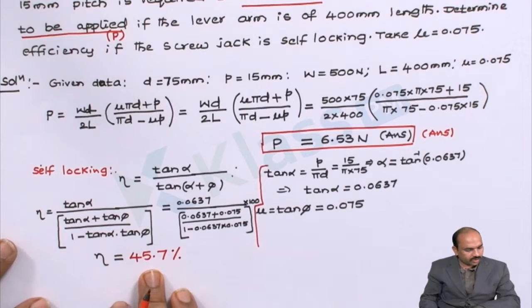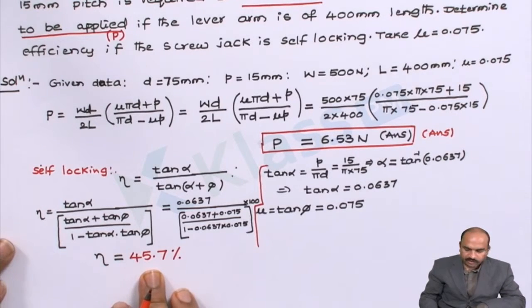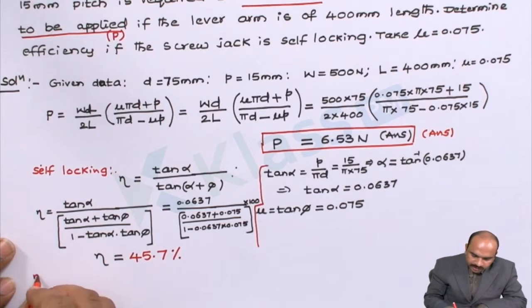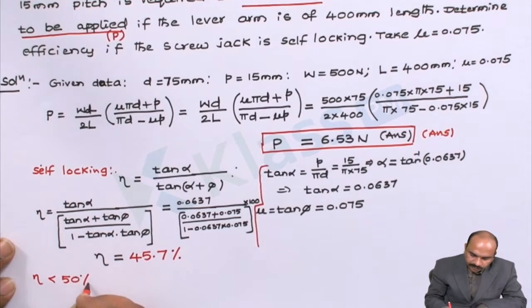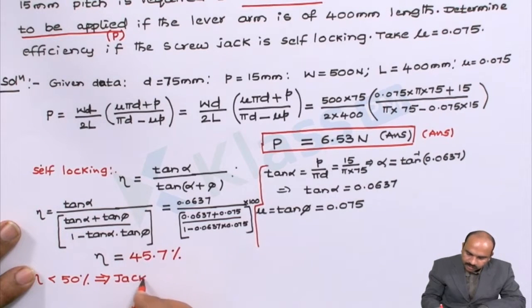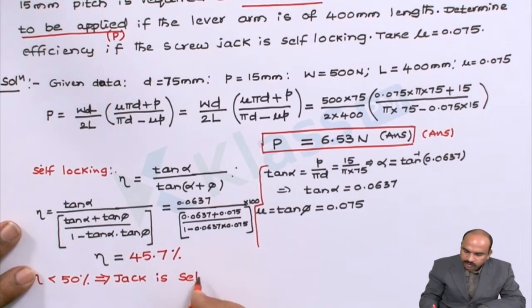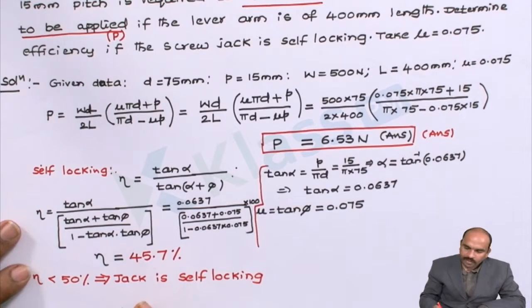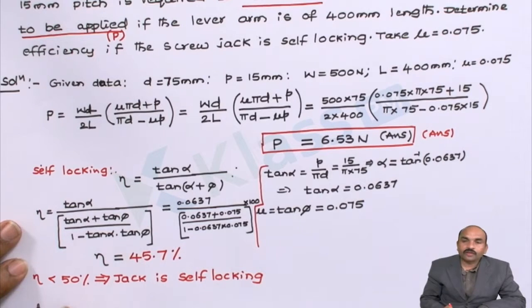Since the calculated efficiency is less than 50 percent, the screw jack is confirmed to be self-locking. This satisfies the self-locking condition, so the screw jack is self-locking.